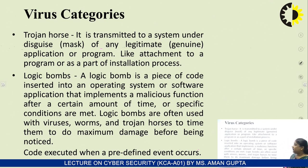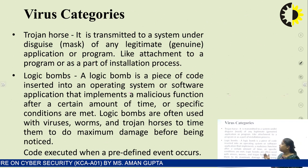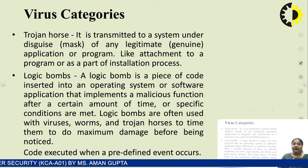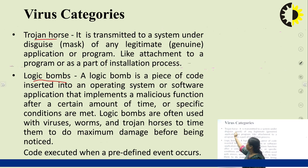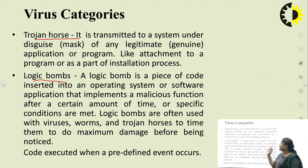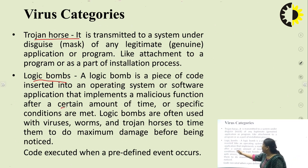We can categorize viruses into some types. First is the Trojan horse, which is transmitted to a system under the mask of a legitimate application or program, such as an attachment to a program or as part of an installation process. Second is logic bombs — a piece of code inserted into an operating system or software application that implements a malicious function after a certain amount of time or when specific conditions are met.